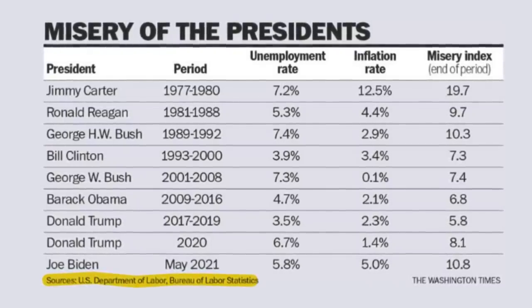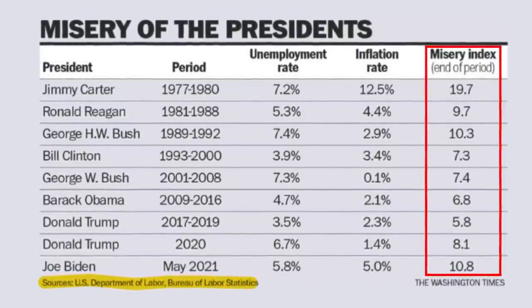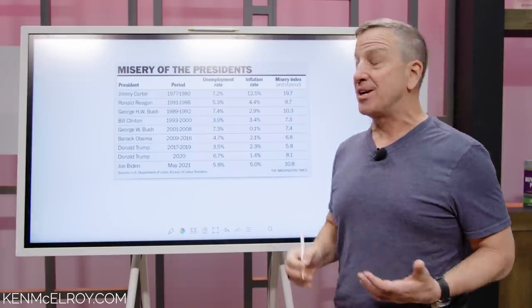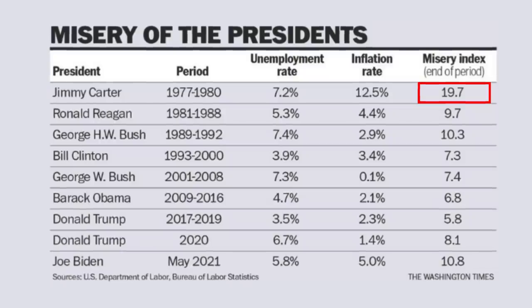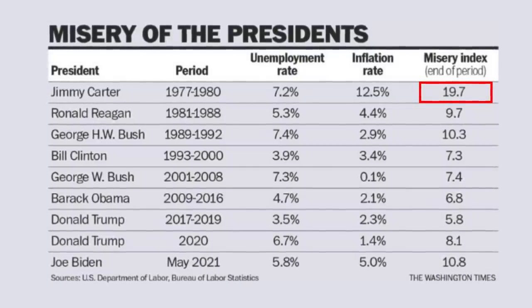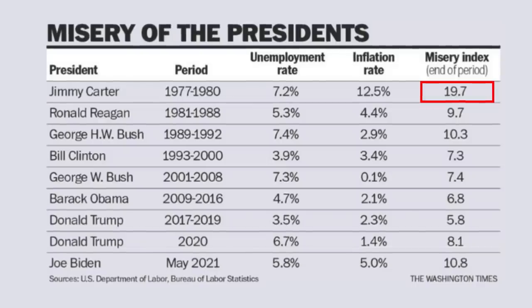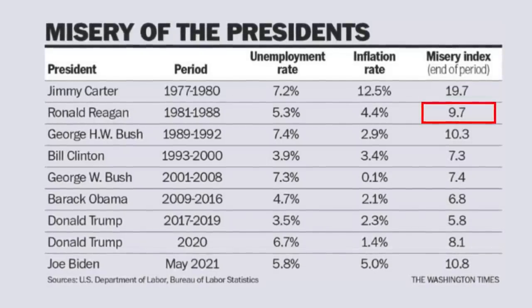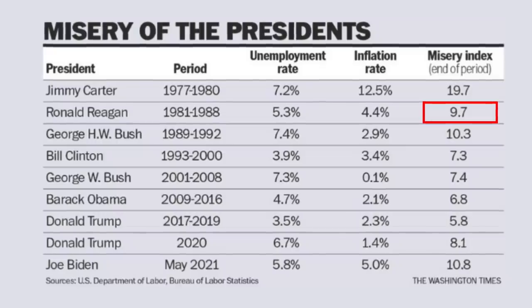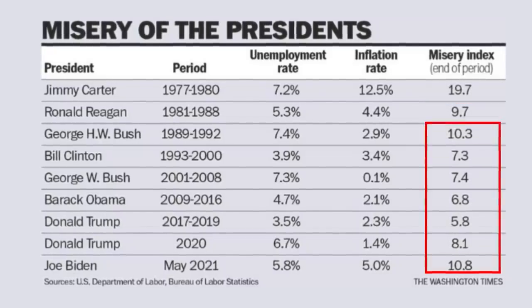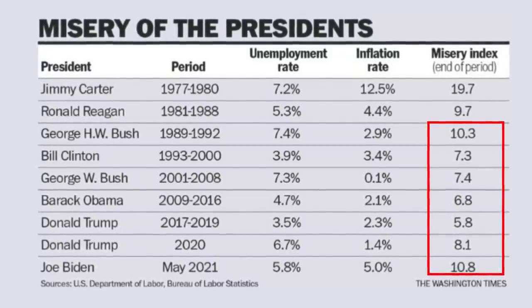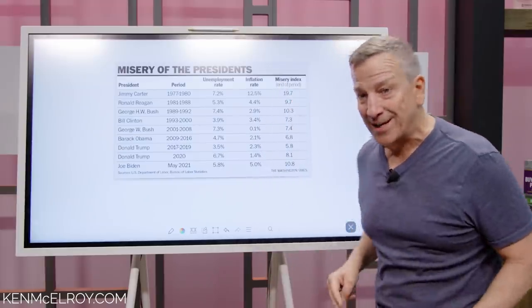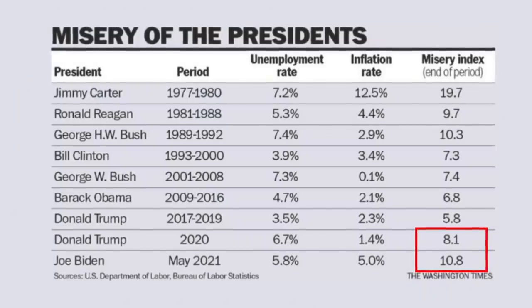What should be obvious is that the lower the score, the better the economy and the better the times. As you can see from the Jimmy Carter era in the 70s and early 80s, the misery index was very high at 19.7, which cost him the election to Ronald Reagan the following year. Reagan was able to get the economy back in order and bring that misery index down to 9.7. Through the following years, we've had pretty good unemployment and inflation, but as you can see from the last two presidents, we're starting to trend back up from 8.1 to 10.8.